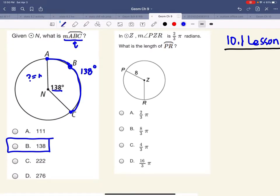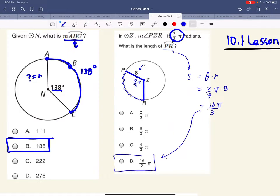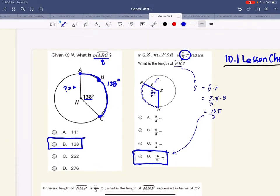Now it says, if the measure of angle PZR is 2/3 pi in radians, what's the length of PR? Notice we do have our radius. So our arc length, which is what they're asking for in PR, would be equal to the angle theta times the radius. So our angle theta is 2/3 pi, and our radius is 8. So this, in our numerator, you have 2 times pi times 8, or 2 times 8 is 16 times the pi, and we still have divide by 3. Notice this matches D. 16 over 3 times pi. Cool.